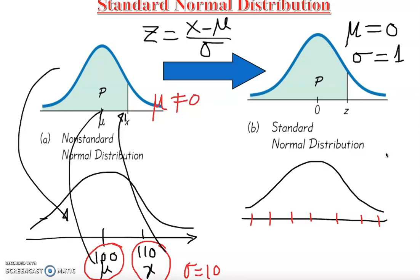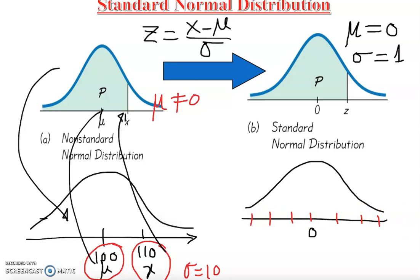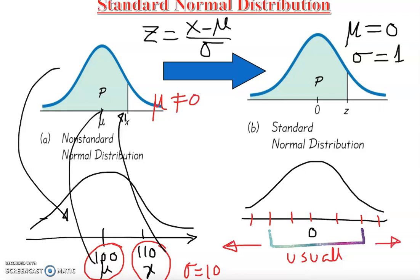Between two standard deviations — between negative two and positive two — values are considered usual. Anything to the left of negative two standard deviations or to the right of positive two standard deviations is considered unusual.